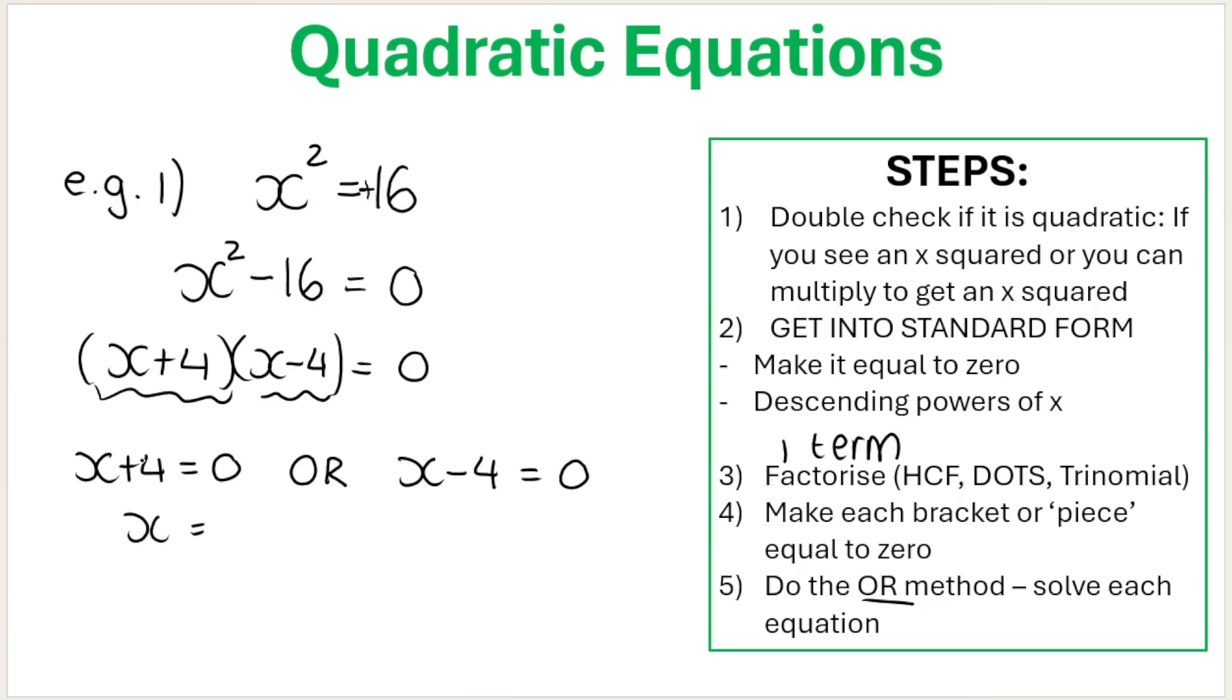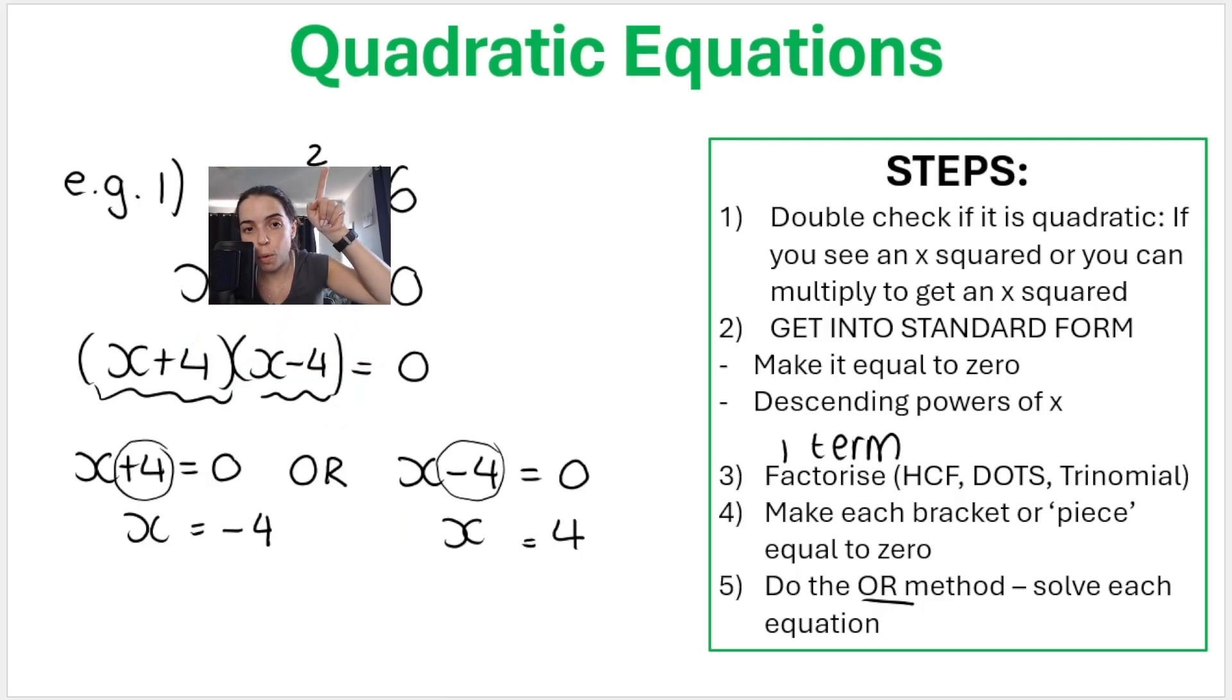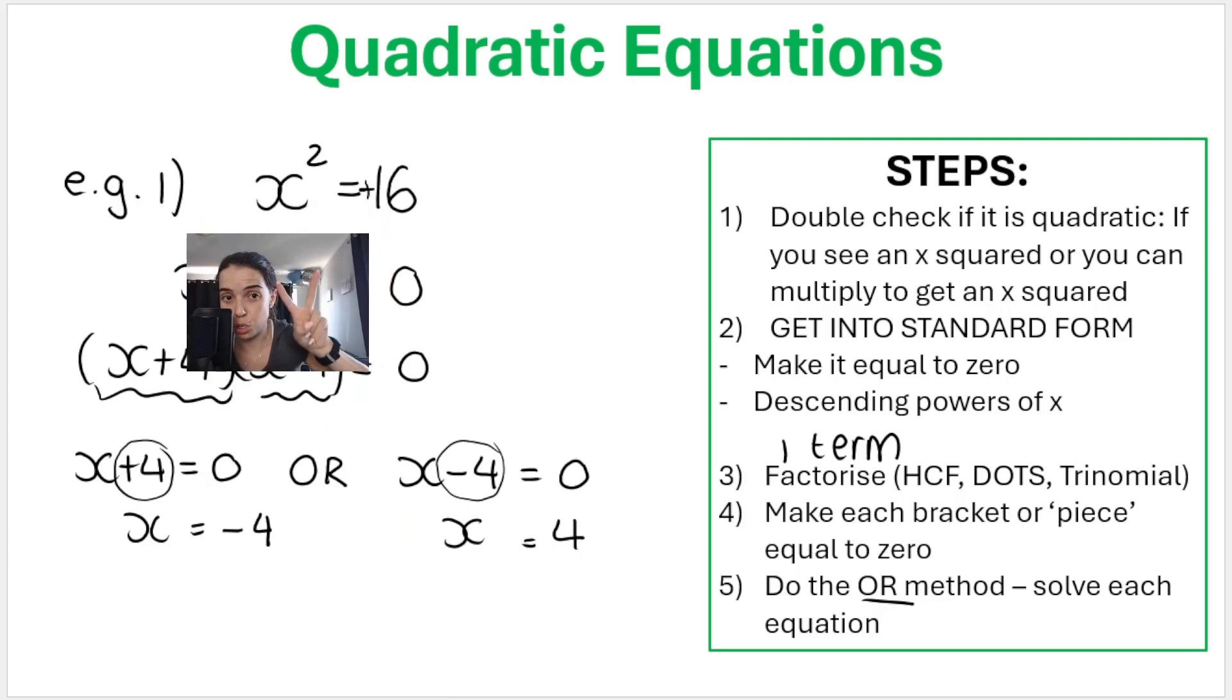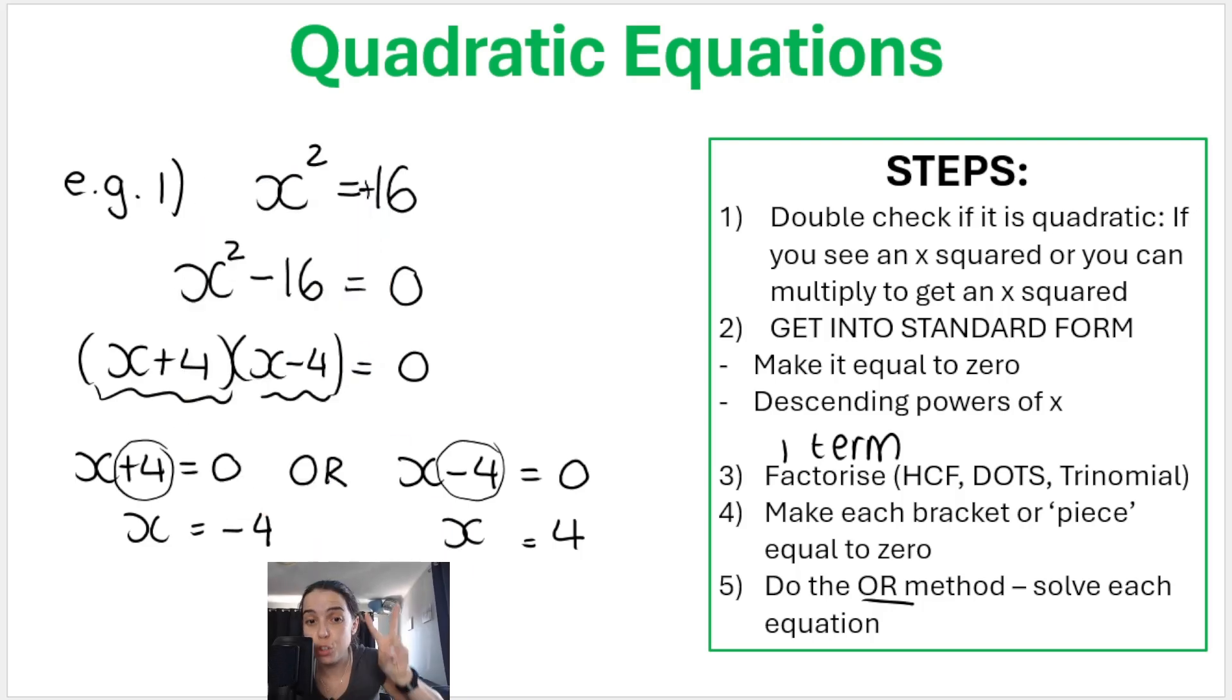So do the or method. Take each piece, make it equal to 0, and then solve each little mini equation. So inverse operations, opposite of plus 4, 0 minus 4, which is negative 4. Inverse operations, opposite of subtracting 4 is adding 4. 0 plus 4 is positive 4. As you can see, we get two solutions. So that is an important thing about quadratic equations. You will get two solutions, two answers. And it makes sense because your exponent over here is 2. You've got a power of 2, two solutions.